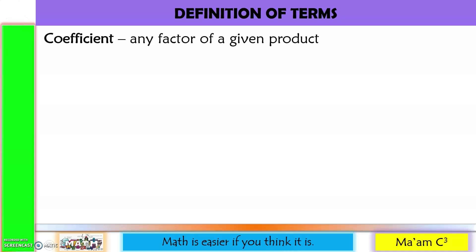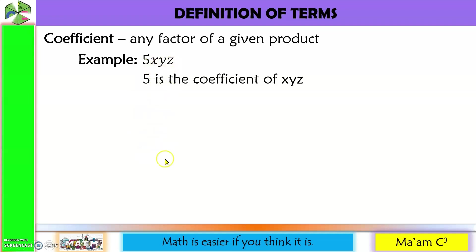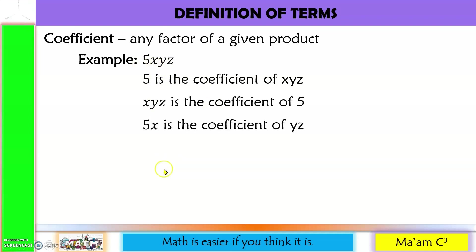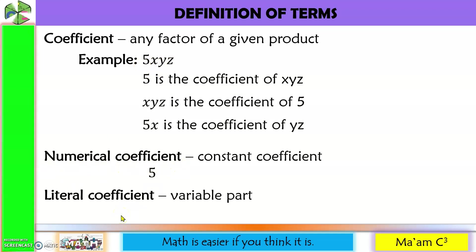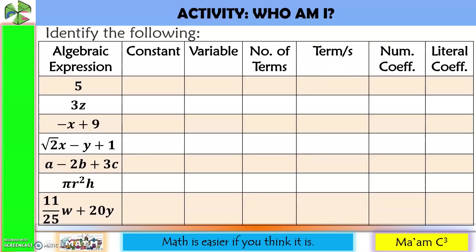Next word, coefficient. Any factor of a given product. Example: 5xyz. So here 5 is the coefficient of xyz, and xyz is the coefficient of 5. We can also say that 5x is the coefficient of yz. Now we have two kinds of coefficient. The numerical coefficient is the constant coefficient — so in here, the constant coefficient is 5. Now you know what it is called when a constant is combined with a variable: it's no longer just a constant, but a numerical coefficient. Another one is the literal coefficient — this is the variable part. So in here, the literal coefficient is x, y, and z.